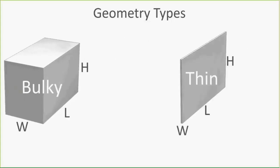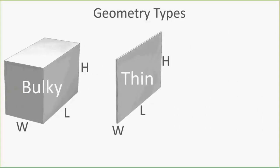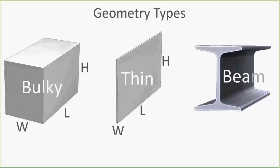The second classification is thin geometry — typically sheet metal, panes of glass, or cardboard, where the thickness is much smaller than the length and height. The third classification is beams — typically weldments — where any constant cross-sectional area being swept or drawn along a certain length is considered a beam. These are the three main classifications that simulation looks at when meshing a model.